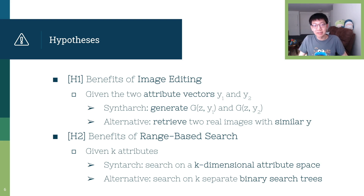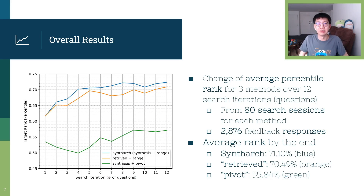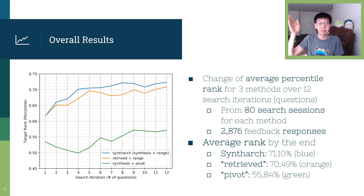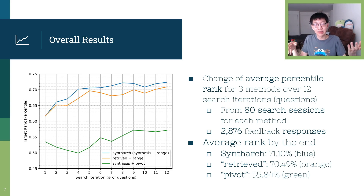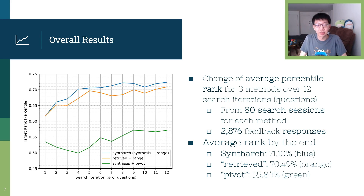For our experiment, we want to evaluate the benefit of image editing and the benefit of range-based search, so we compare the performance of our method to that of the alternatives. From a live experiment of 80 search sessions per method, we recorded a total of 2,876 relevance feedback responses. The plot on the left shows the change of search accuracy measured by the percentile rank for all three methods as the search progresses. We observed that the rank of the target image over time for the SynZarge method, represented by the blue line, exhibits the most consistent increasing pattern and has the highest rank percentile among the three methods. We concluded that the SynZarge method is more likely to perform better than other alternative methods by the end of the 12-question search, as well as for most iterations, validating both of our initial hypotheses.